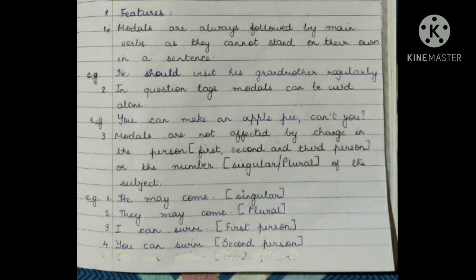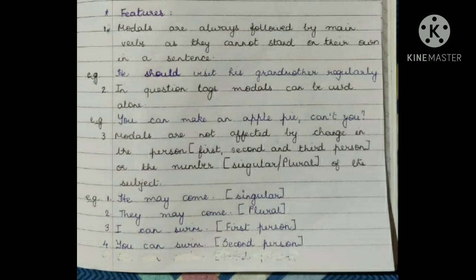The second feature is question tags. In question tags, modals can be used alone. For example: 'You can make an apple pie, can't you?' Here 'can't you' is a question tag. After 'can't you', we have not used the main verb. So we can use a modal in question tags alone.